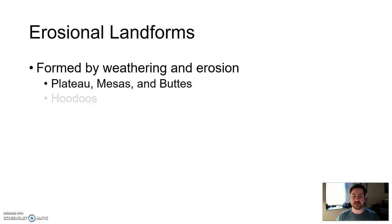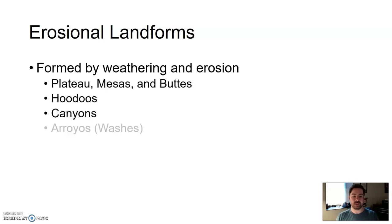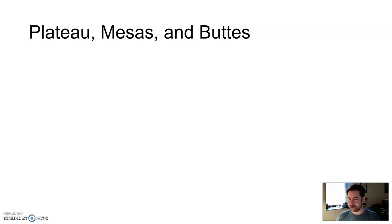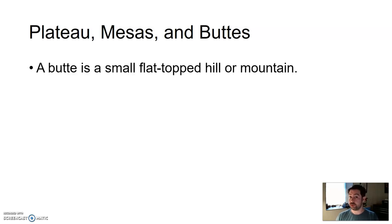Plateaus, mesas, buttes, hoodoos, canyons, arroyos — sometimes known as washes — and natural arches are just among the few. Plateaus, mesas, and buttes are all kind of the same thing. They're distinguished by their size. They all form the same way and look roughly the same, but depending on their size, we call them either a plateau, mesa, or butte.